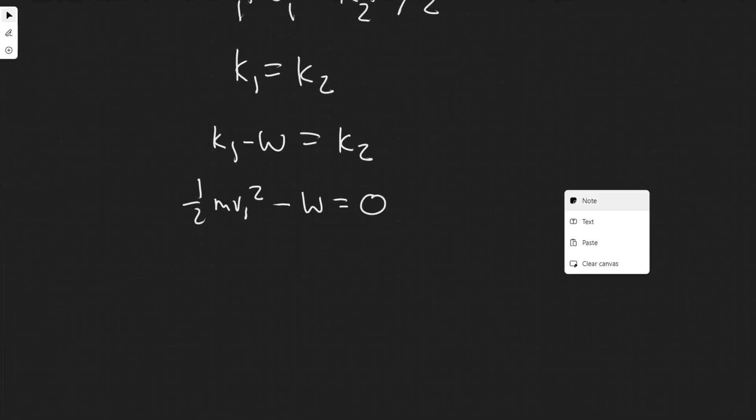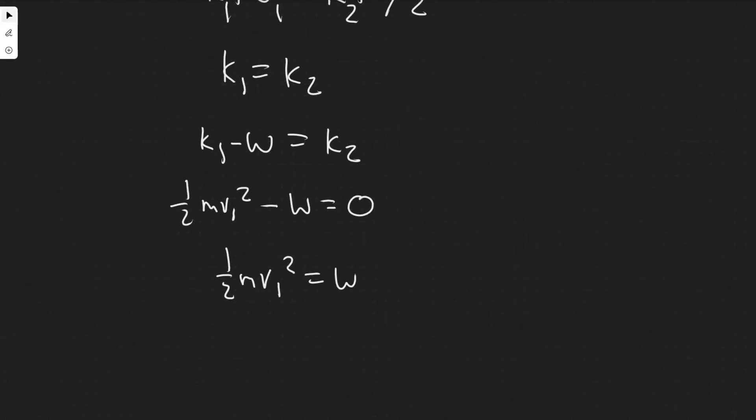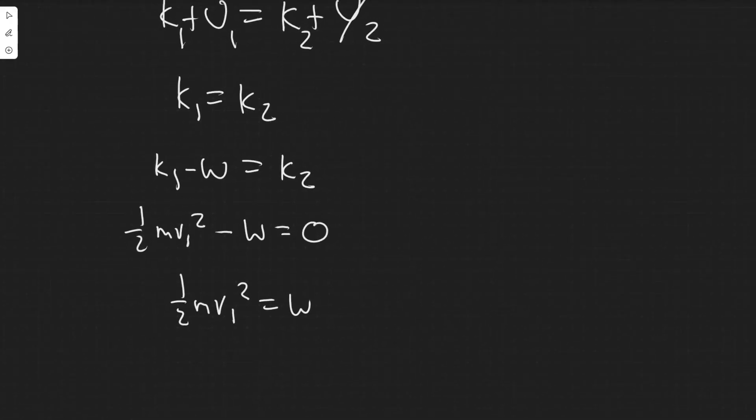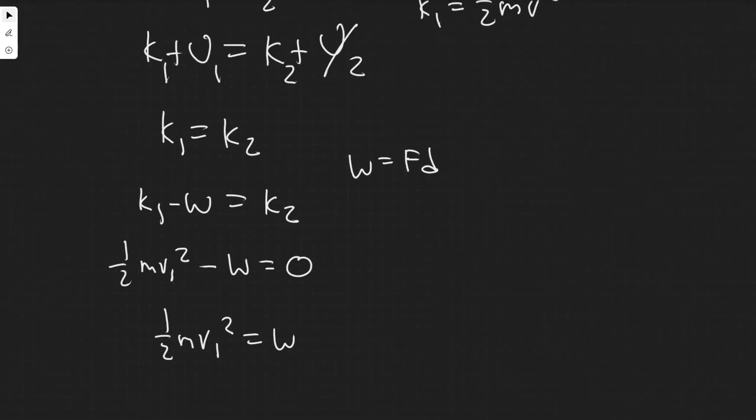This tells us that 1/2 MV² equals the work done by friction. How do we find the work done by friction? The work formula in general is force times distance. If we know the force and the distance, we can calculate the work done.